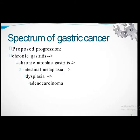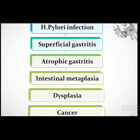The spectrum of gastric cancer involves a proposed progression: chronic gastritis → chronic atrophic gastritis → intestinal metaplasia → dysplasia → adenocarcinoma. H. pylori infection has a strong association with both gastric ulcer formation and gastric carcinoma, following the sequence: superficial gastritis → atrophic gastritis → intestinal metaplasia → dysplasia → cancer.